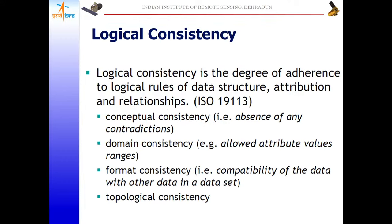Completeness is also important. Sometimes purchased datasets are incomplete, and sometimes they contain excess data. Incomplete data is called an error of omission; excess data is an error of commission. Both must be avoided. Logical consistency refers to adherence to logical rules — for example, roads should not overlap buildings or rivers without a bridge. Domain consistency means that if classes are defined from one to five, a value of six should not appear.